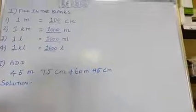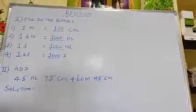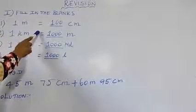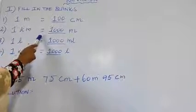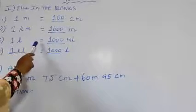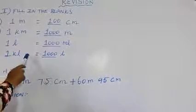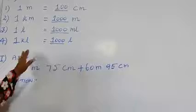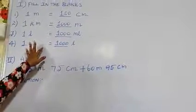Good morning children. In this session, I am going to give a revision for your exam. Our first heading: fill in the blanks. 1 meter is equal to 100 cm. 1 km is equal to 1000 m. 1 liter is equal to 1000 ml. 1 kiloliter is equal to 1000 liters. Children, we already studied this in our measurement long and short chapter. Just I have to recall you.